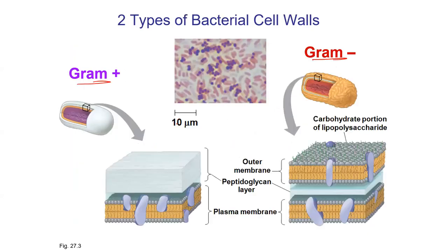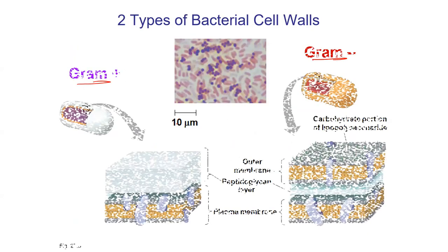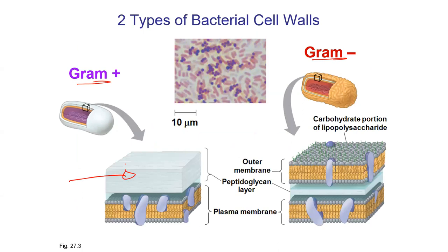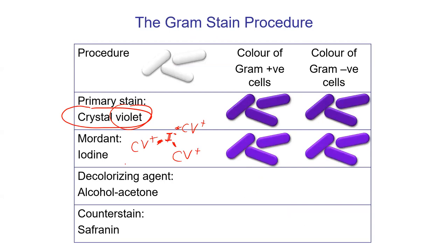The gram-positive cell wall is big, and there's a huge area for those crystal violet-iodine complexes to get trapped in. The gram-negative cell doesn't have that thick layer — in fact, it has an extra membrane which doesn't let the crystal violet permeate very well into the cells. So you wash with a little bit of alcohol: the gram-positive cells stay purple, and for the gram-negative cells the purple color washes away quite easily.